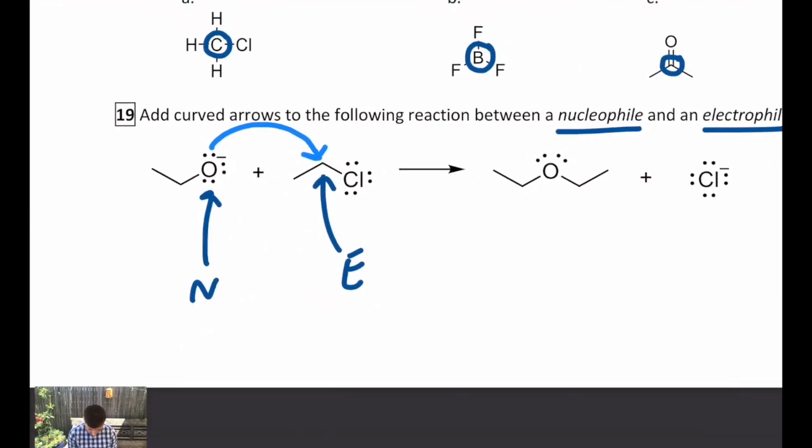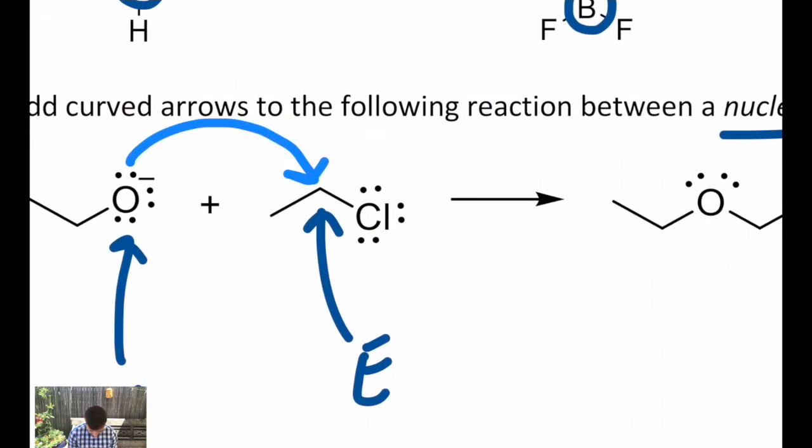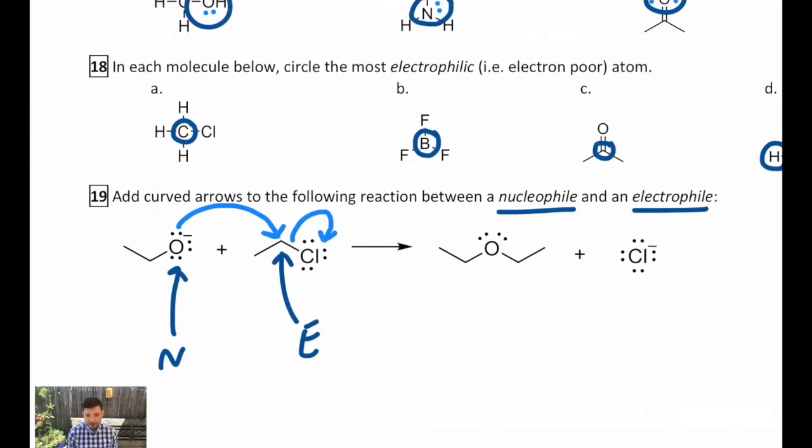So I have an arrow from the oxygen to the carbon. That shows the new bond that's formed. But there's also a bond that broke. It's this carbon-chlorine bond. Where did those electrons go? They ended up on the chlorine atom. So I need one more curved arrow that shows that bond breaks, and the electrons end up on the chlorine. So there's our first nucleophile slash electrophile mechanism, and we'll see a lot more of those as we go forward in this course. That's actually called an SN2 reaction, and you've made a functional group known as an ether. So congrats, now you know how to make an ether.